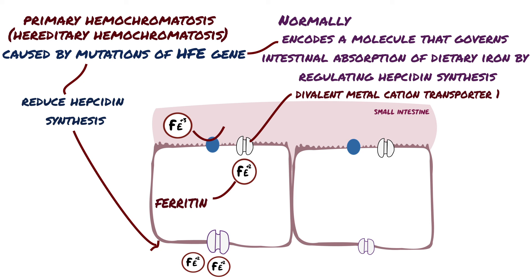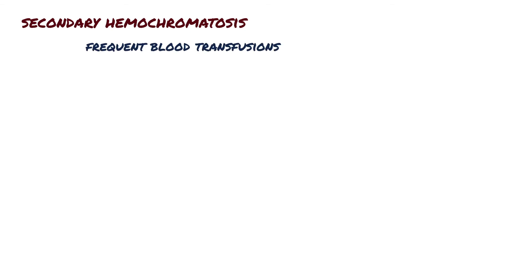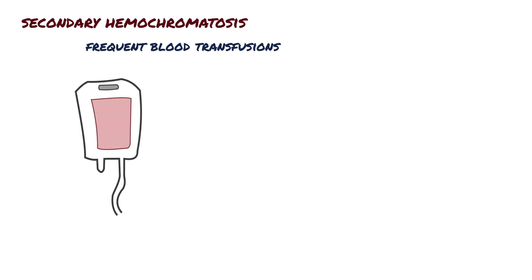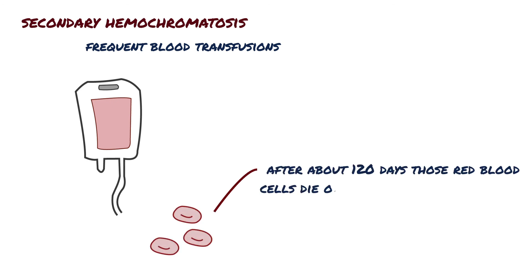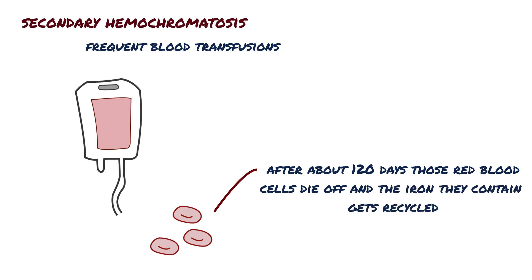If hemochromatosis is brought on by some other means besides a genetic mutation, it's called secondary hemochromatosis. An example of secondary hemochromatosis is through frequent blood transfusions. When you get new blood through the transfusion, after about 120 days, those red blood cells die off and the iron they contain gets recycled. So each new bag of blood basically adds a bag of iron to your body, meaning lots of transfusions means lots of iron in the blood.